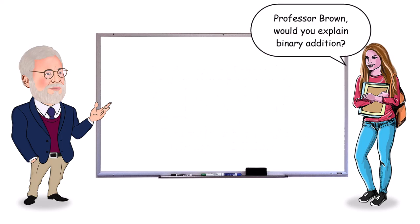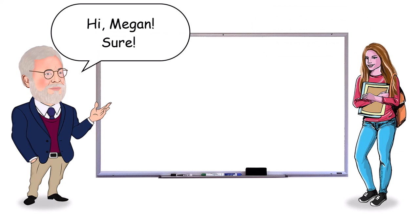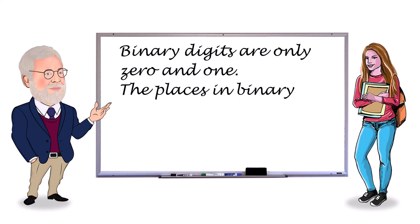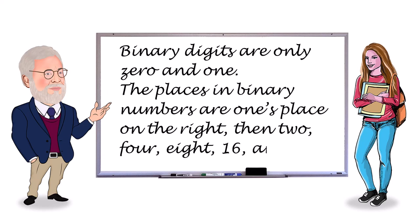Professor Brown, would you explain Binary Addition? Hi, Megan. Sure. Remember, binary digits are only zero and one. The places in binary numbers are once place on the right, then two, four, eight, sixteen, and so on.